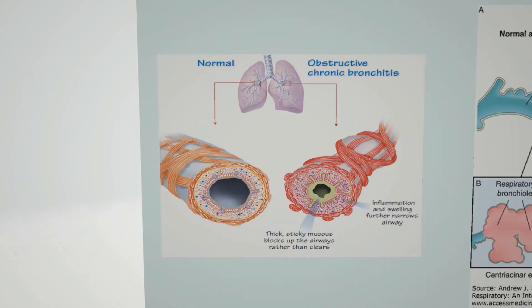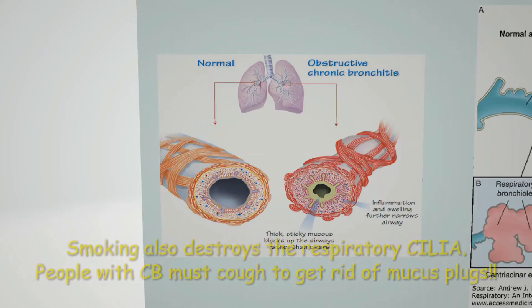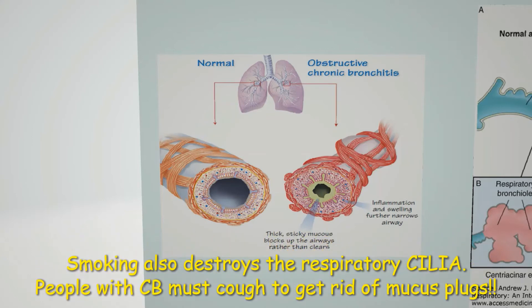To make things worse, smoking makes the cilia short and less mobile, making it harder to move mucus up and out of the bronchioles towards the back of the throat to get swallowed. So people with too much mucus and poorly functioning cilia end up relying on coughing to get rid of their mucus plugs.